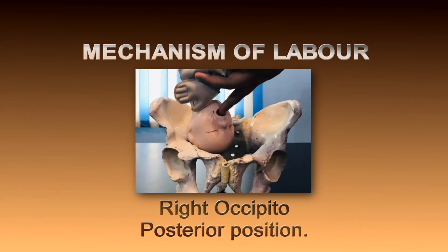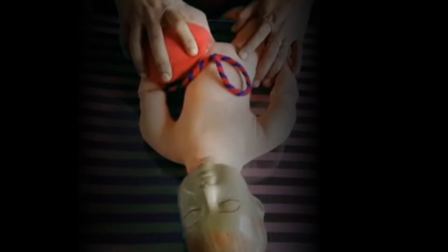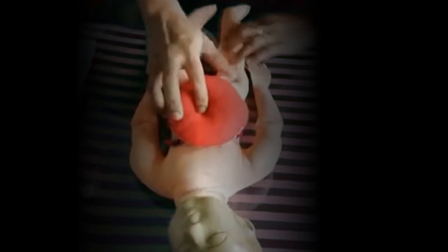Now I will explain the mechanism of labor in right occipital posterior in the case of long rotation. Before starting the mechanism of labor, it is very important to know how to hold the baby properly. In right occipital posterior, we have to hold the baby in the left hand. Bend both legs towards the abdomen, cross both hands over the chest, and hold the baby like this, supporting the head.